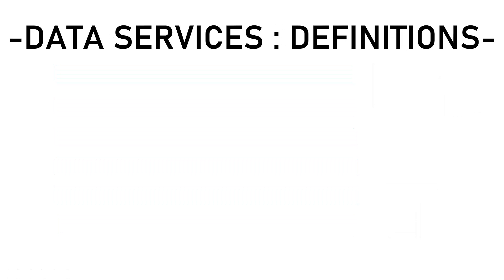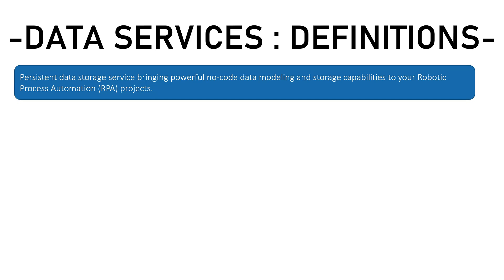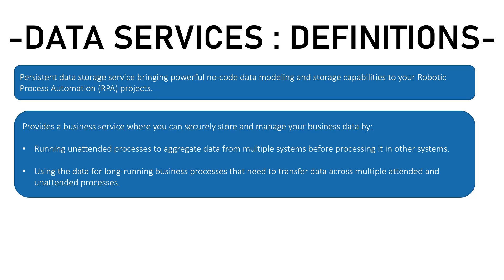Now let's see the formal definitions provided by UiPath. Data services provide a persistent data storage service, bringing powerful no-code data modeling and storage capabilities to RPA projects. Data services provide a business service where you can securely store and manage data by running unattended processes to aggregate data from multiple sources — such as SAP, Excel, or folder structures — before processing into another system. The link for this documentation will be posted in the description.